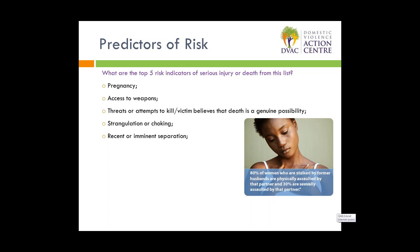Recent or imminent separation is actually a big risk indicator. Strangulation, choking and separation are two of the top five risk indicators. If he believes that she's going to leave or she has recently left, her risk is quite high — higher than it would have been if she stayed in the relationship. Which is interesting because we suggest that women should leave violent relationships, but it actually is more risky, especially that first six weeks post-separation. And then again at the 12 to 18 month point — we theorise this is probably to do with the fact that things like divorces, property settlements and children's arrangements become finalised around that time.